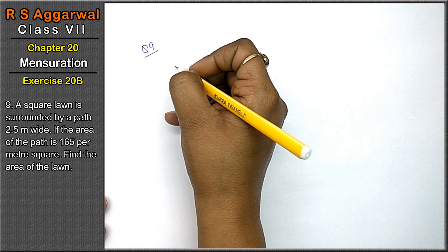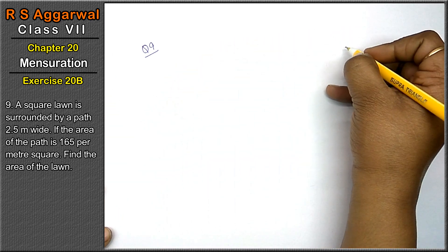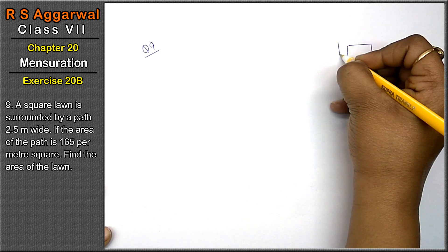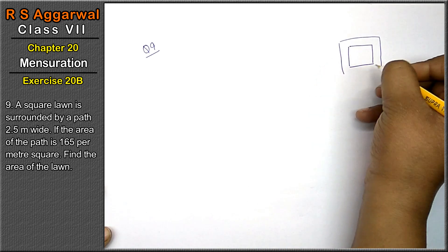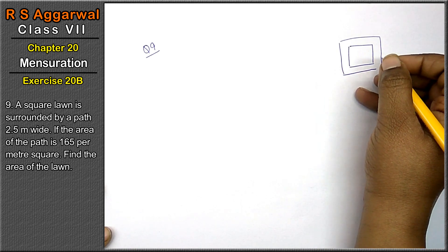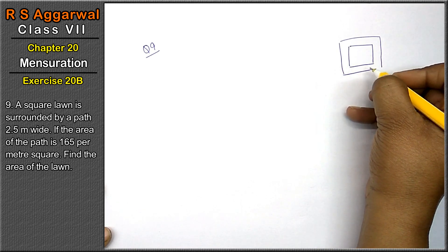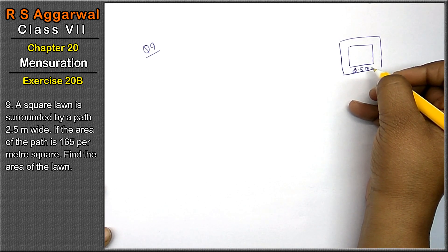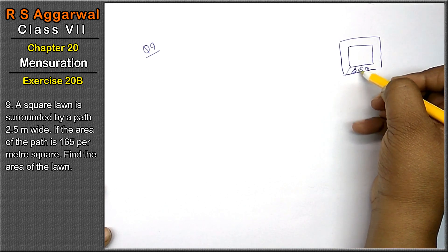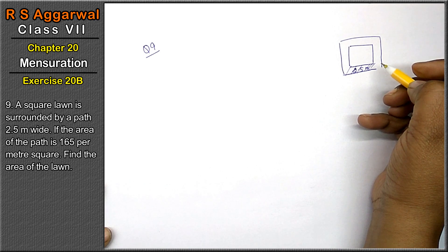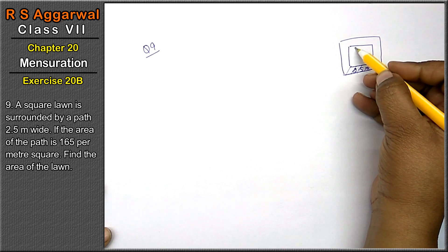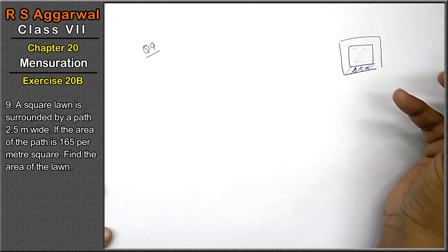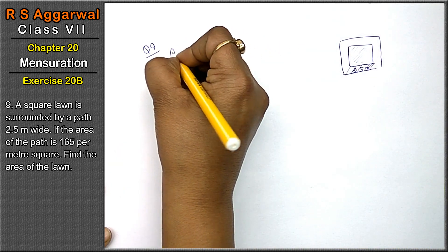Question number 9: A square lawn is surrounded by a path 2.5 meters wide. If the area of the path is 165 square meters, find the area of the lawn. This is a square lawn.